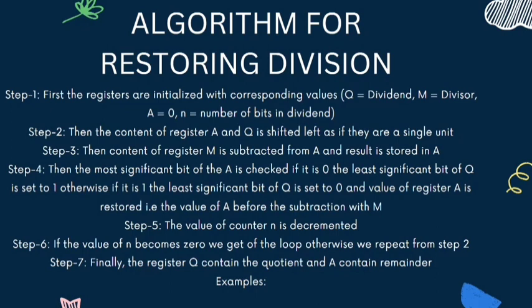Step 1: First the registers are initialized with corresponding values. Step 2: Then the content of registers A and Q is shifted left as if they are a single unit. Step 3: The content of register M is subtracted from A and the result is stored in A.